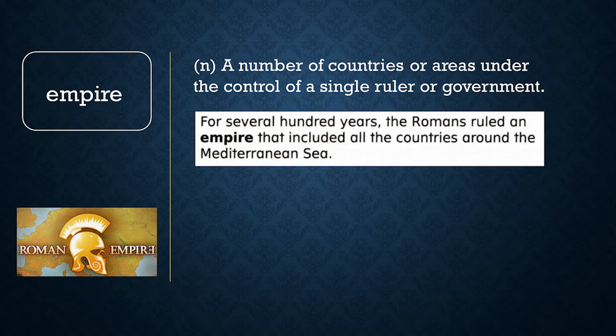Empire. Say, empire. An empire is a number of countries or areas under the control of a single ruler or government. For several hundred years, the Romans ruled an empire that included all the countries around the Mediterranean Sea. Now let's review word meaning. Choose A or B: each country in an empire A has its own government, or B is under the control of the same government. If you said B, you are right. Countries in an empire are all ruled by the same government or leader.